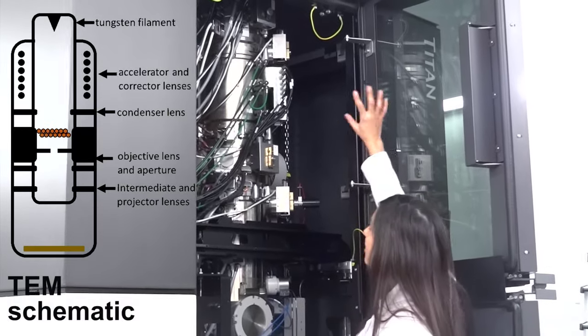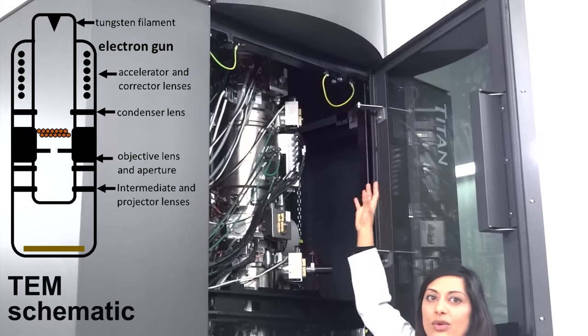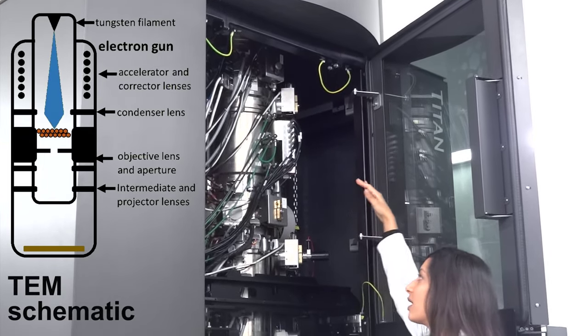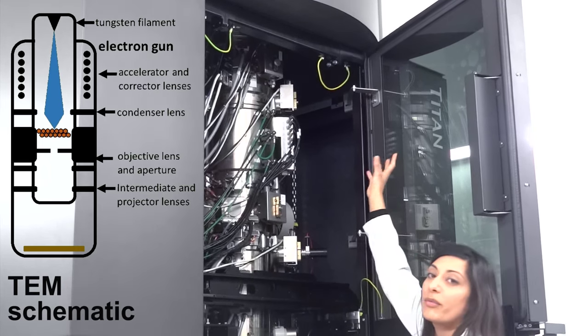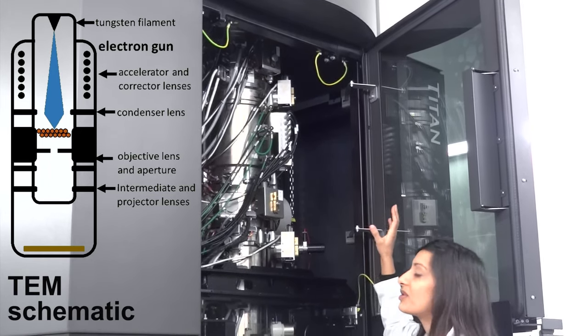I'll explain what's going on. At the very top of the column we've got the electron gun. This is where the electrons are generated. They're accelerated by a series of electrodes from approximately zero speed to about 75% of light speed.